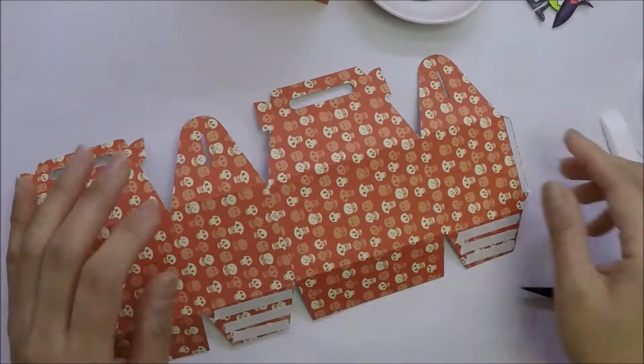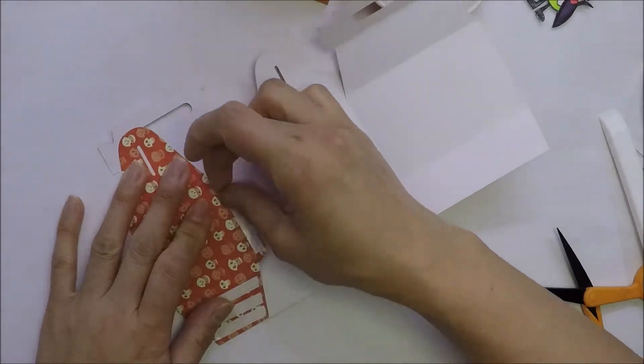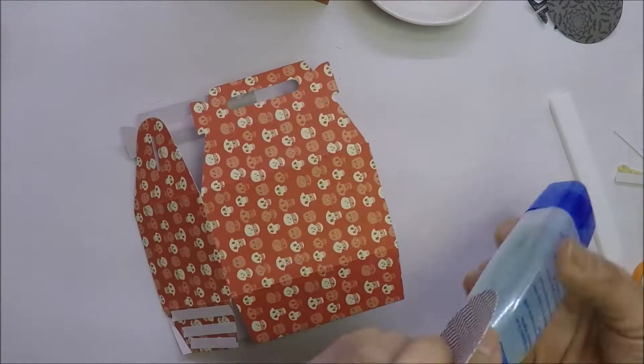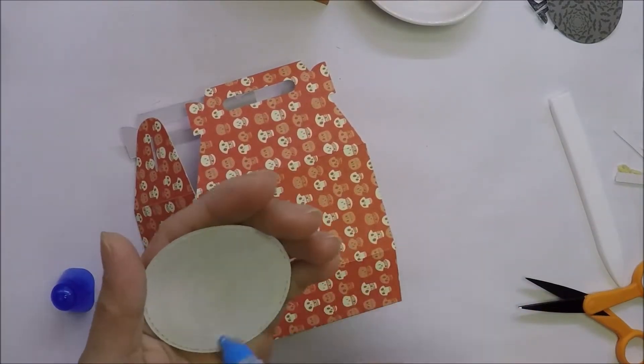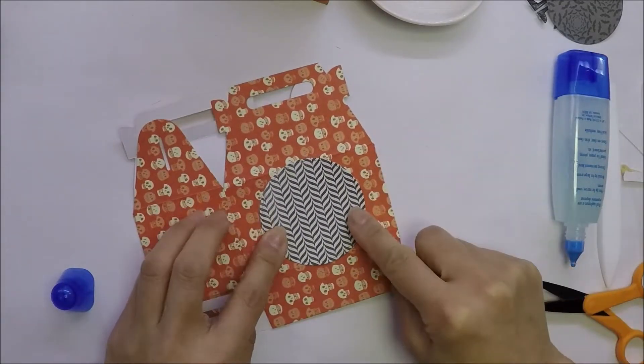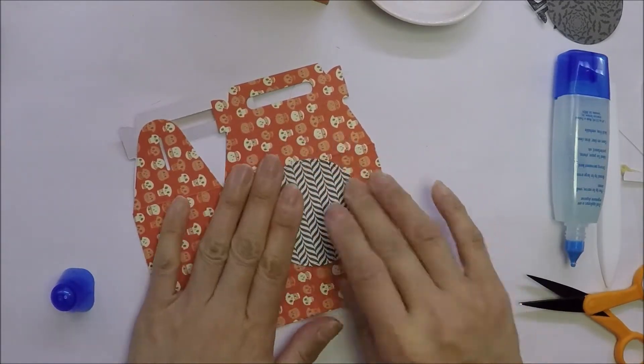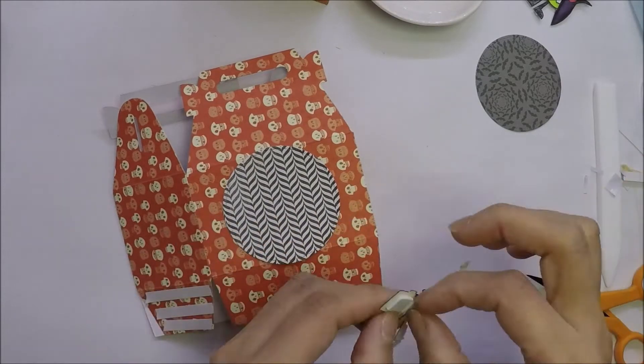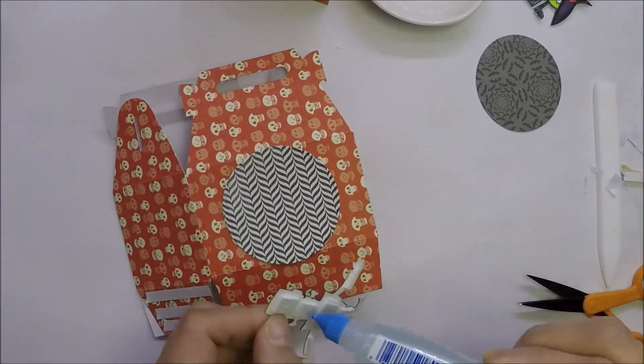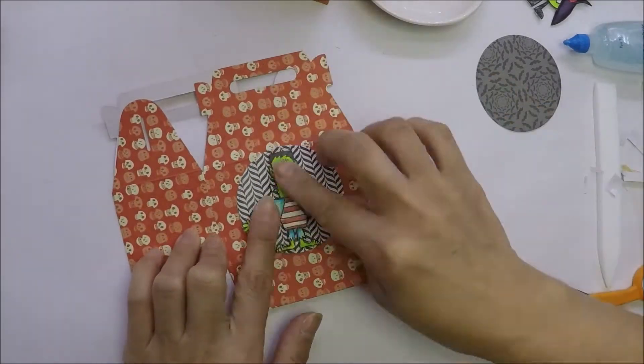Before I close the bottom of the box, I will adhere my paper that I die cut with stitch circle die and add my image on top of it using foam tape and a little bit of glue. And then I will adhere it on top of the circle die cut.